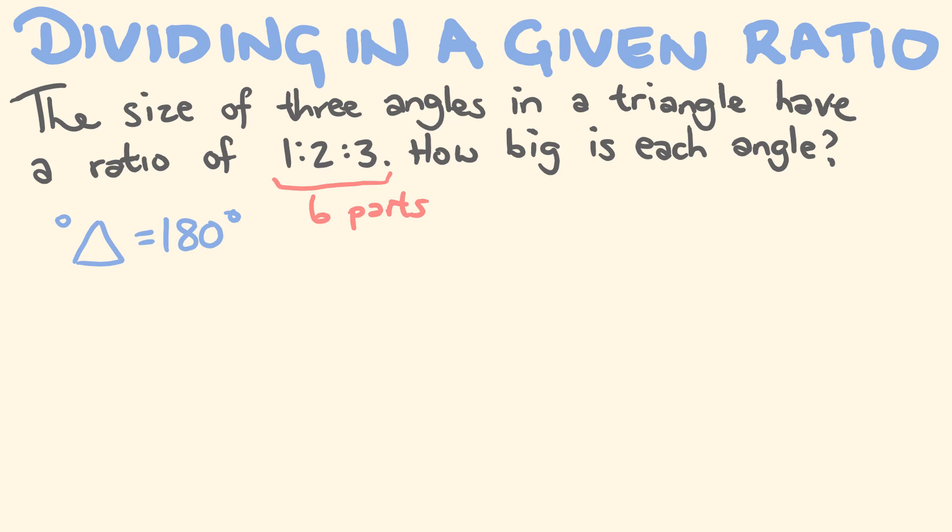So what we would do here is we're going to go 180 degrees divided by 6, and this will tell us how big each part is. Each part, 180 divided by 6, is 30 degrees. So in our triangle, we have three angles. One getting one part, the second one getting two parts, the third one getting three parts. So if you're getting one part, you're going to be 30 degrees. If you're getting two parts, you're going to get 2 times 30, which is 60 degrees. And our third angle is going to get 3 times 30, which is 90 degrees.